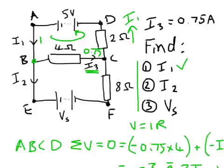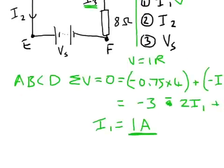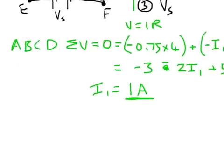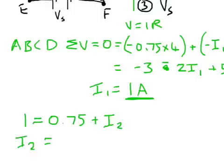That means, let's draw it in an equation form, we'll do it this way. 1 equals 0.75 plus I2. So I2 equals 1 minus 0.75, which is 0.25 amps. Easy peasy.